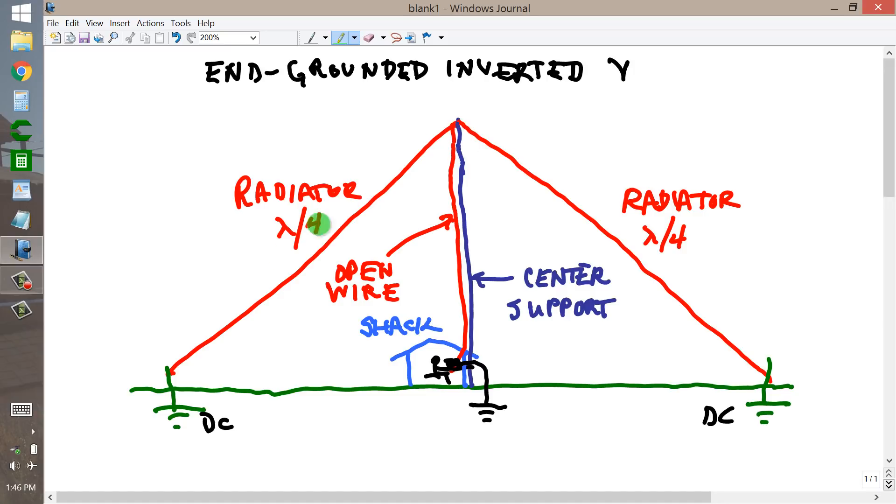This antenna is meant primarily for the lower bands, such as 3.5 megahertz, 1.8 megahertz, maybe 7 megahertz. And don't forget 5 megahertz, if you'd like to operate that band. The higher bands, it's too small, you can do it.